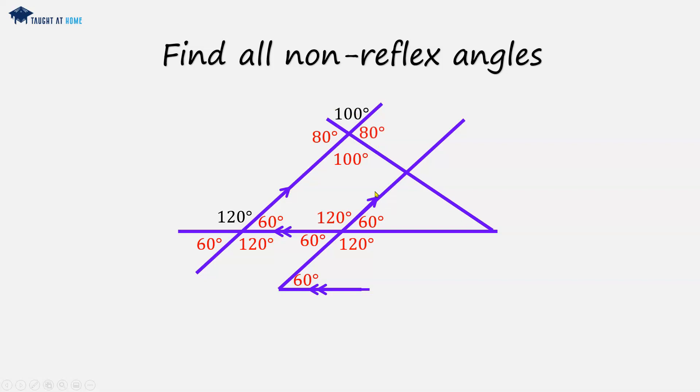Because these two straight lines are parallel, and we've got this straight line cutting through them, we've got corresponding and alternate angles here. So we can copy all of these and put them here, as these four angles will be the same.